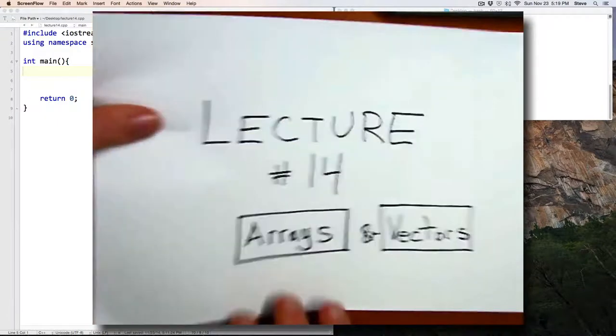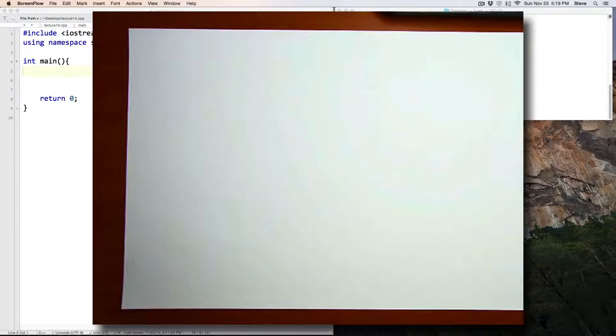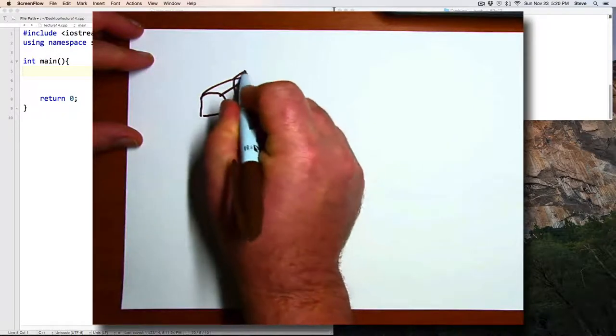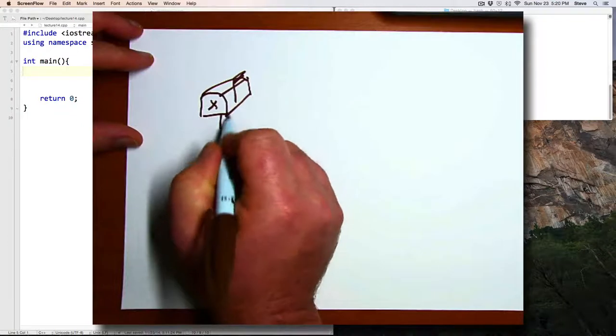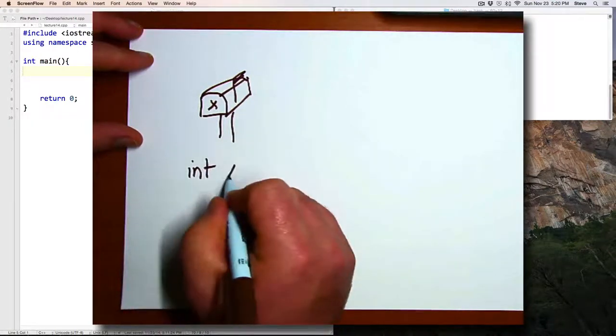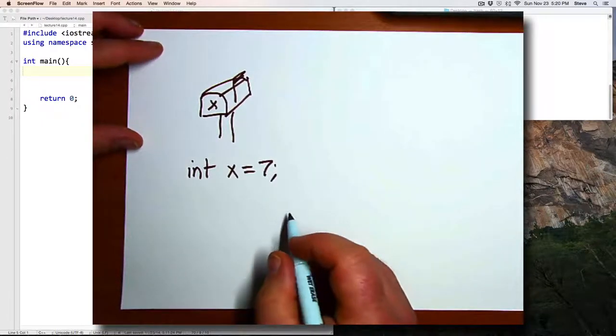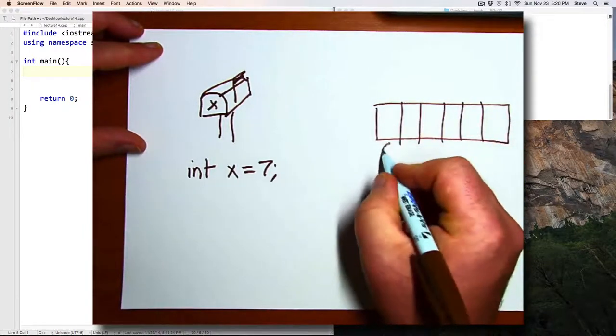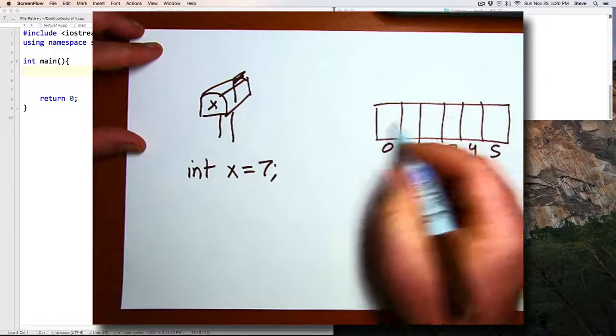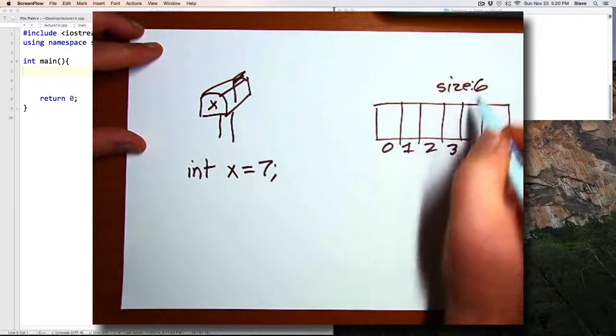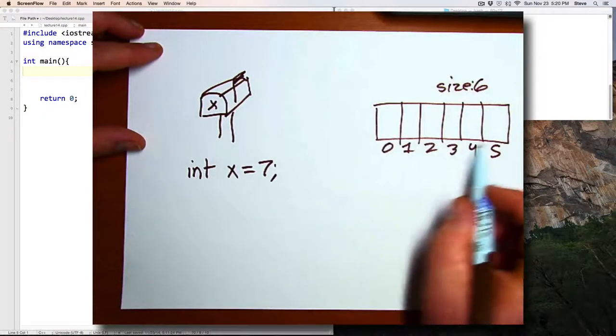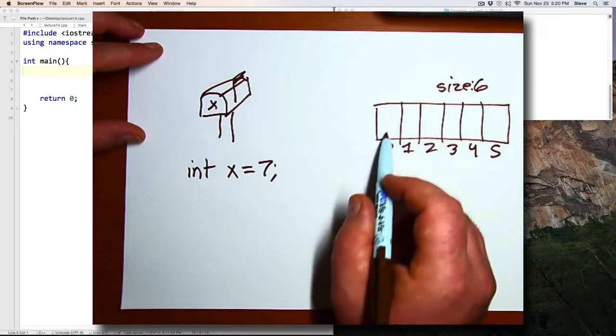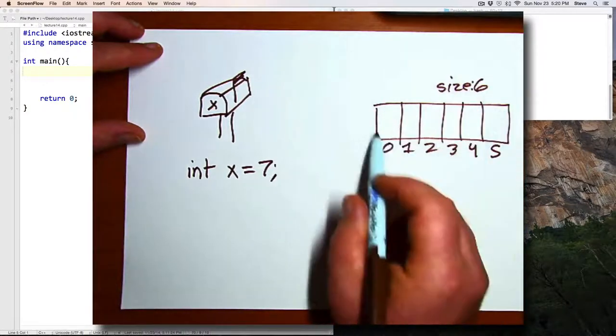Let's imagine a difference between getting mail at a house and an apartment. In front of a house, you might have a mailbox with a flag, and inside that mailbox you can have one single value. For example, int x, and we'll give it an initial value. But in front of an apartment building, you might have a row of mailboxes. So here we have six mailboxes.